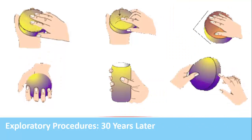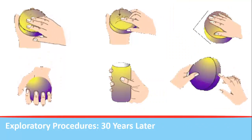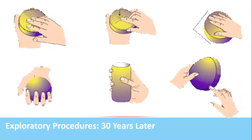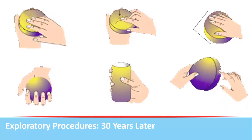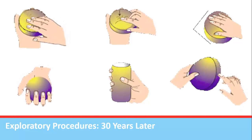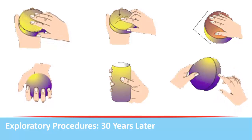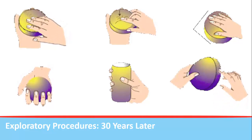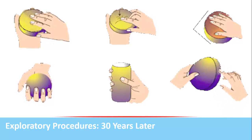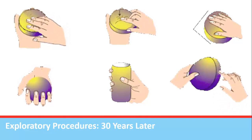The workshop entitled Exploratory Procedures 30 Years Later examines progress in understanding haptic exploration since the 1987 paper of Lederman and Klatzky that described hand movements for purposes of perceptual encoding. It will communicate state-of-the-art efforts in this area across a variety of domains and measurements.